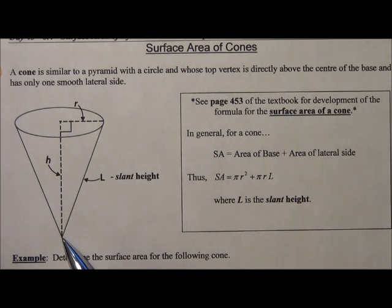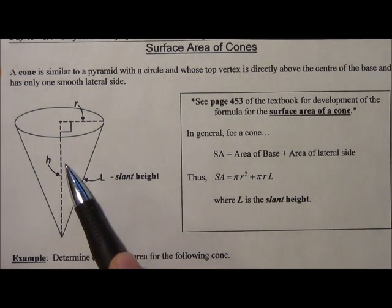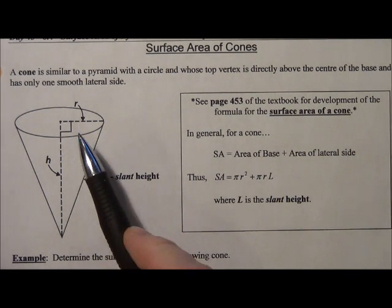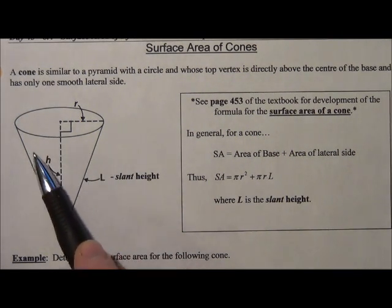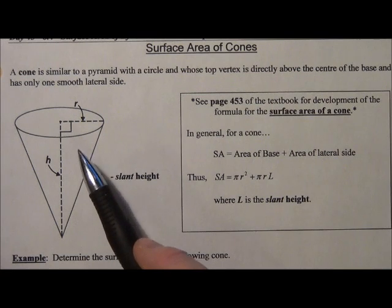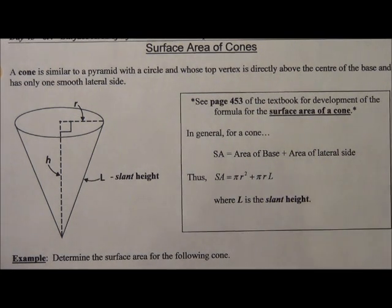And again, the vertex is directly above the center, or in this case, below the center of the base. And the cone has just one smooth lateral side that slightly resembles triangles, but they are not made of triangles like the pyramids are.